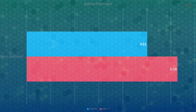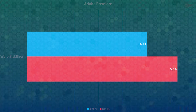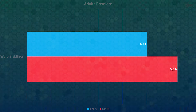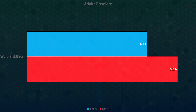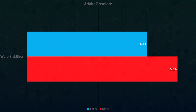What might be the most interesting part for content creators is how it compares in Adobe performance. When using warp stabilizer, I got a small but meaningful improvement — before it took 5 minutes 14 seconds, now it takes 4 minutes 11 seconds. A tiny improvement, but still something.